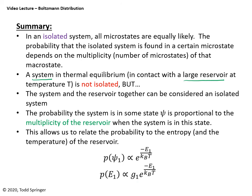So that's where we are so far. In this lecture we only worked with ratios of probabilities, but we may want to know exact probabilities, not just ratios. To get there, we need to figure out what normalization factor goes alongside the Boltzmann factor — and that's where we're going next.